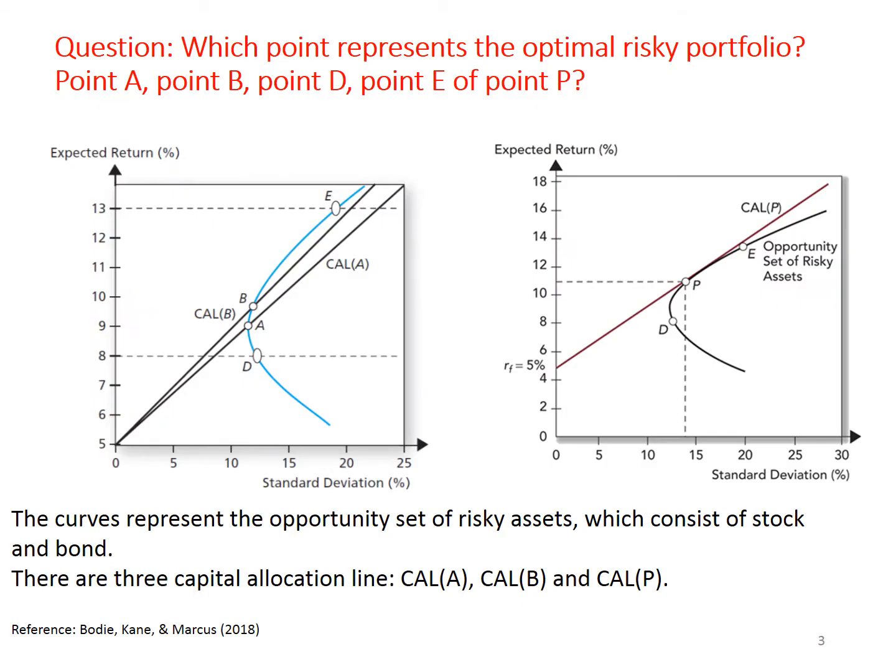Let's have a quick quiz to test your understanding. In the two figures, the curve represents the opportunity set of risky assets which consists of stock and bond. There are three capital allocation lines: CAL-A, CAL-B, and CAL-P. Take note of points A, B, D, E, and P. Which point represents the optimal risky portfolio?